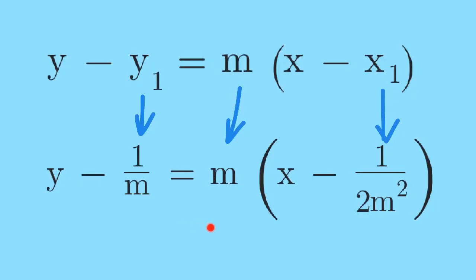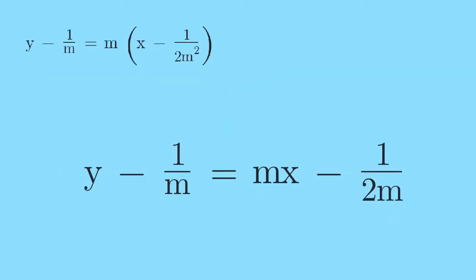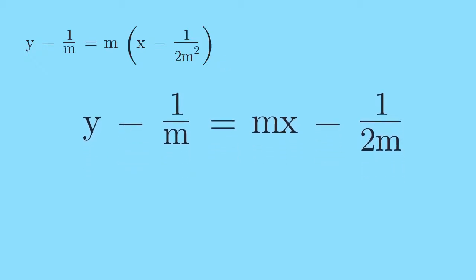We will simplify this equation before we find the differential equation. This is our new equation. We remove the parentheses in the last equation. Now, multiply both sides by 2m to clear the denominator.